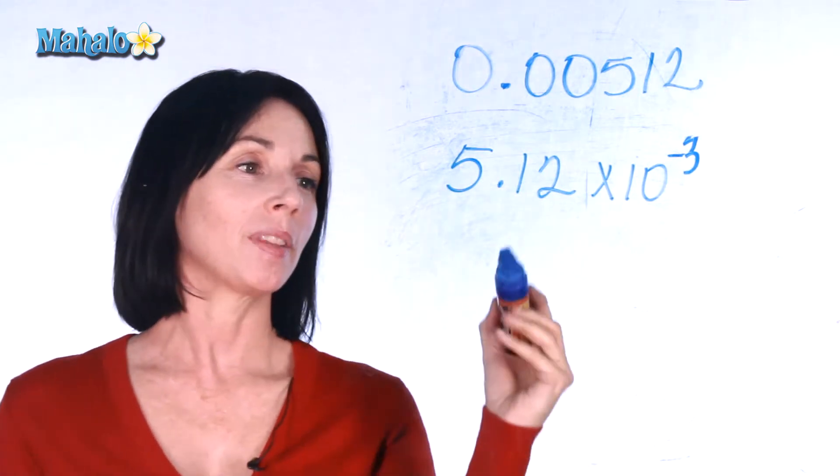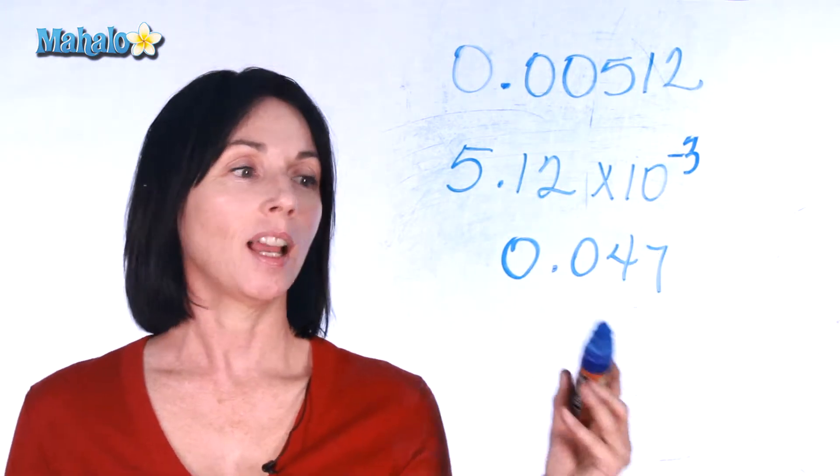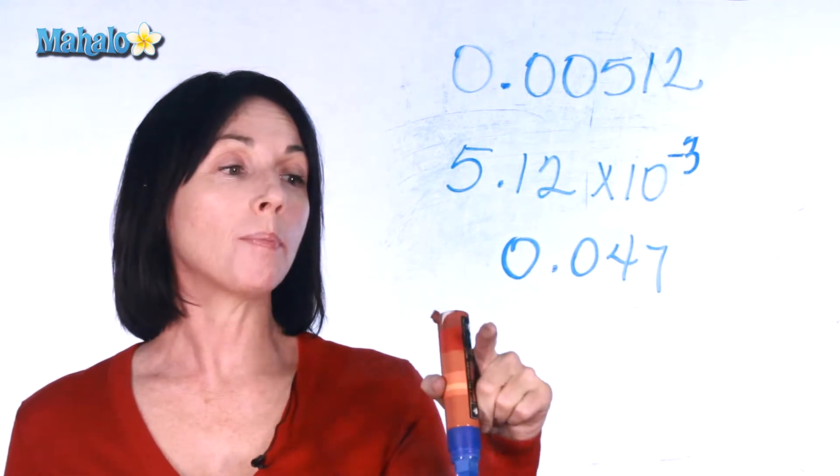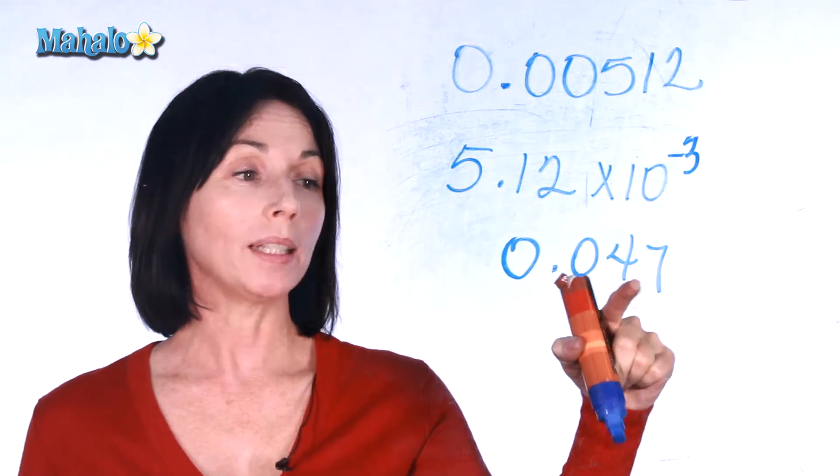Let's try one more. Let's say we have 0.047. Okay, so what number are we going to want to have first? We'd like to have 4.7.